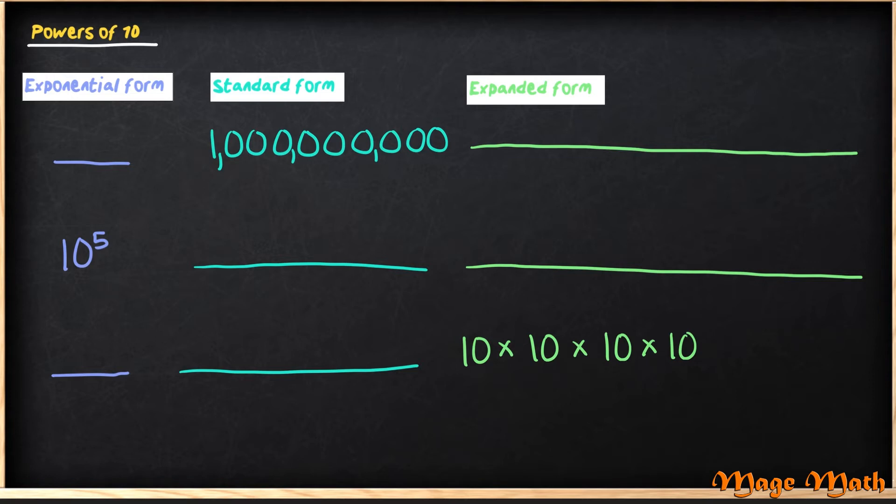For the first one, I see that I'm missing exponential form and expanded form. So the first thing I will do is count my zeros. I see that I have 9 zeros. I will write my 10 and my exponent of 9, 10 to the 9th power.